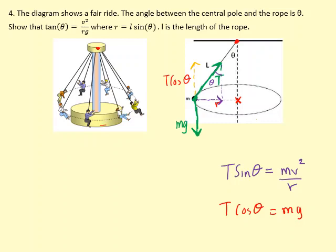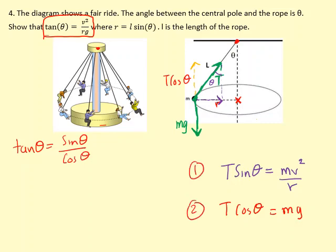Now how to deal with this situation? Because we're trying to show this over here. How do we get tan theta? This is where you have to recall your math identity: tan theta equals sine theta over cosine theta. So what we can do is divide these equations from one another. So you get T sine theta over T cosine theta equals mv² over r over mg.